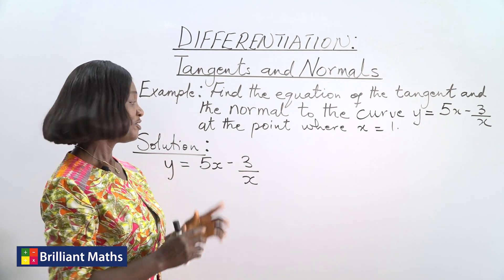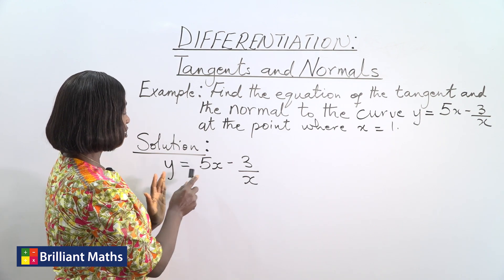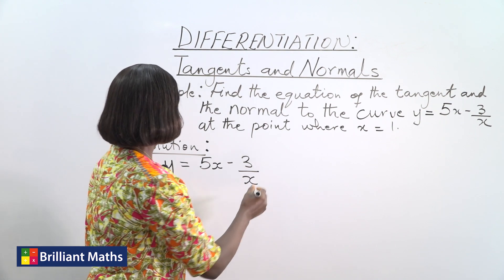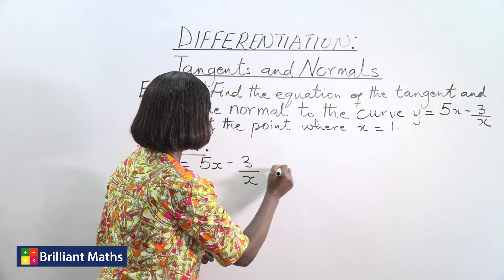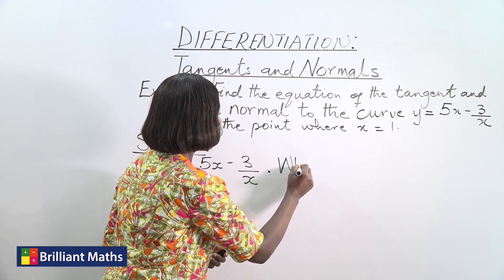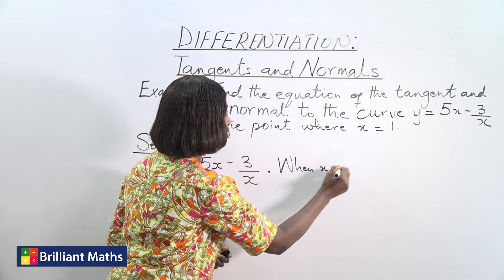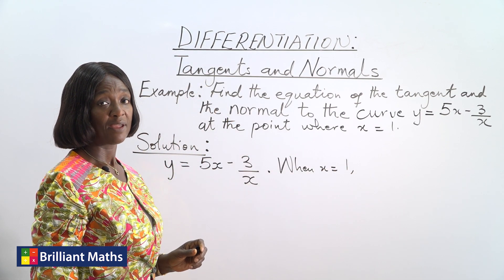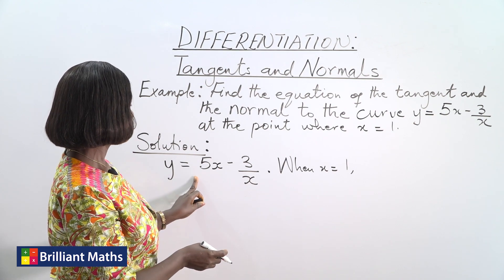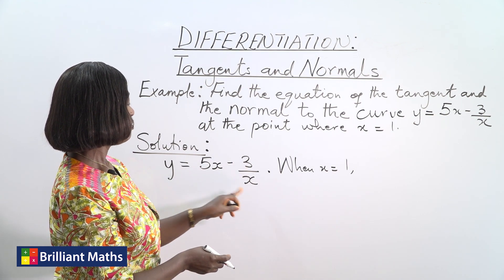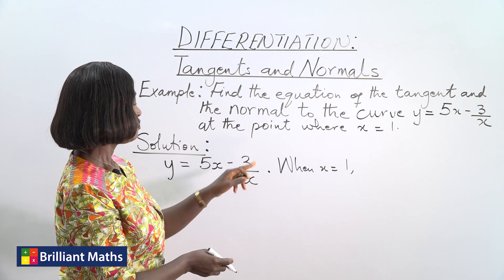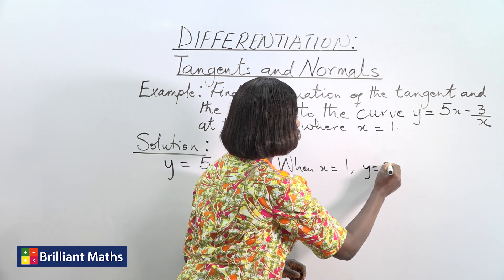So let's go. First step: y = 5x - 3/x. When x = 1, what is the value of y? Because I want to get the coordinate of the point. When x is 1, y will be 5 times 1 which is 5, minus 3. So y will be equal to 2.